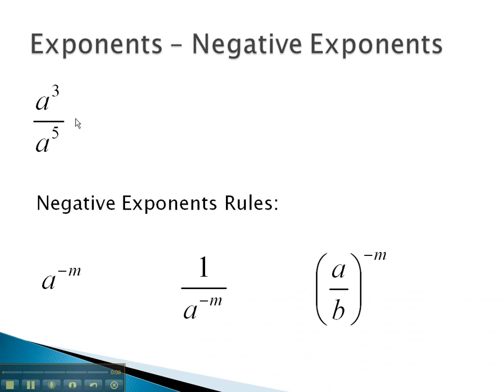To set this up, we will consider a cubed over a to the 5th. a cubed means we have 3 a's in the numerator, and a to the 5th means we have 5 a's multiplied in the denominator.